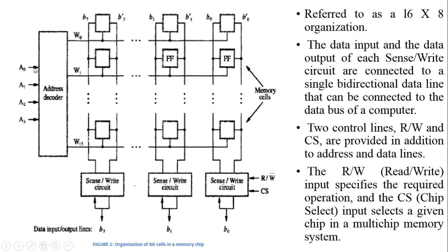Based on the address information 0001, this address decoder fixes the first row of memory. That indicates the first byte, so word line W1 fixes all eight flip-flops of the first byte. After fixing these eight flip-flops, the sensor-write circuitry transfers the data taken from the external bit lines vertically upward to the corresponding flip-flops. From each sensor-write circuitry, the taken data is transferred vertically upward to the corresponding flip-flop. This completes the memory write operation.